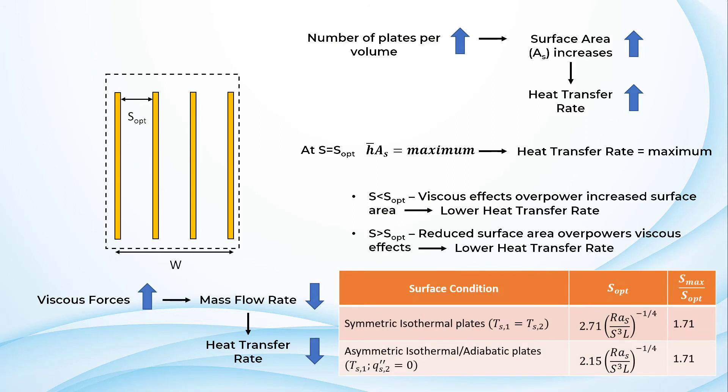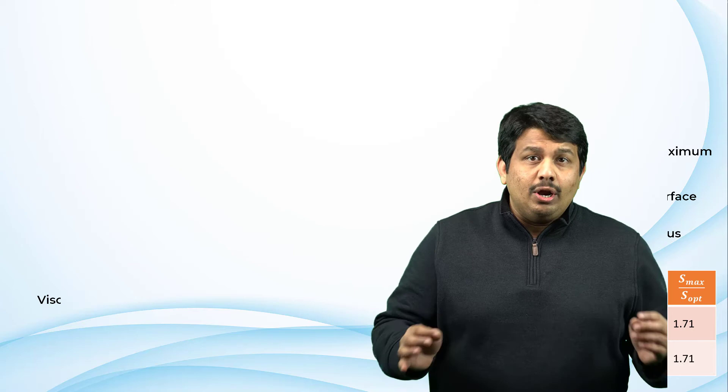The following table shows the empirical relations that can be used to calculate the optimum plate separation distance. To maximize the heat transfer from each plate, the distance between the plates should be large enough to prevent the merging of the boundary layers from the adjacent plates. The value of S at this condition is generally referred to as S max.